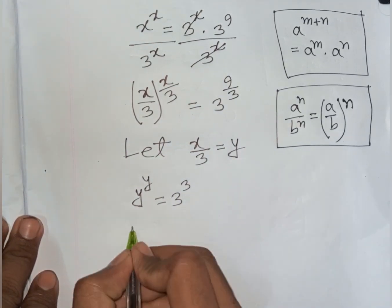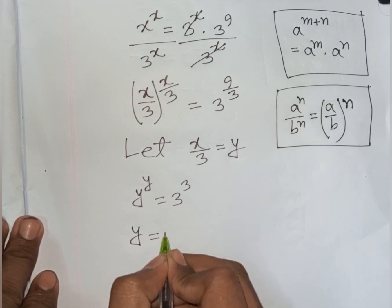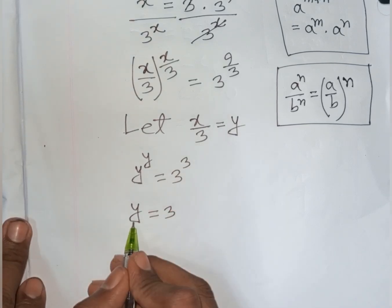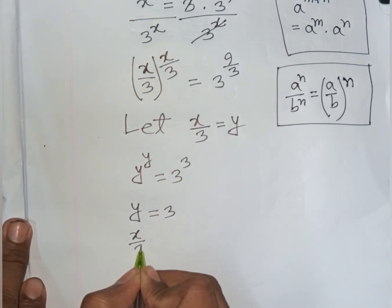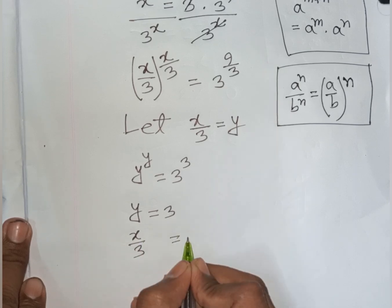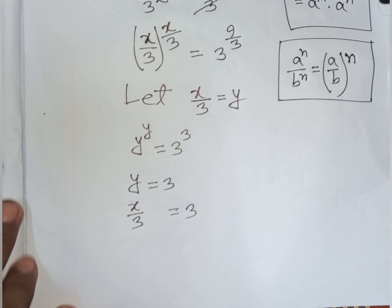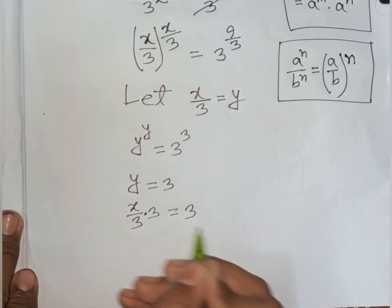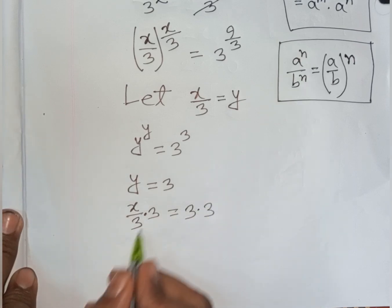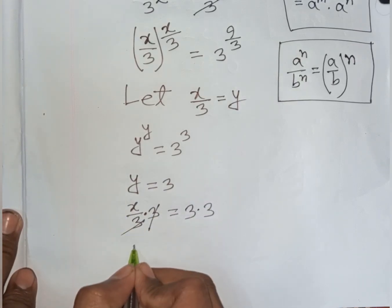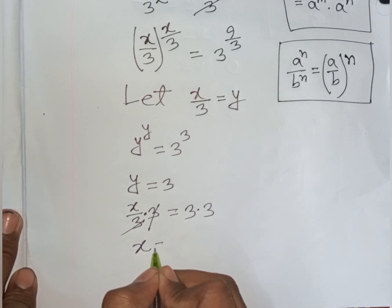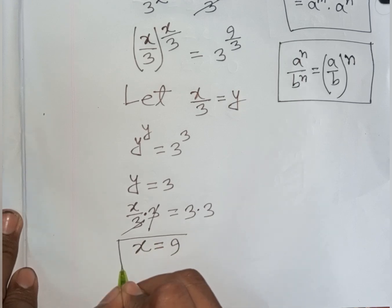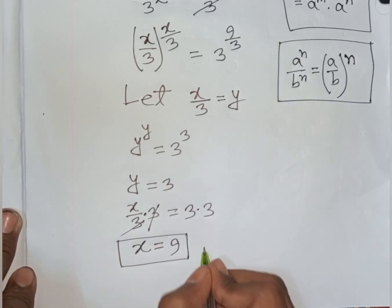From here, y equals 3. But remember that x divided by 3 was substituted by y, so x divided by 3 equals 3. To find x, multiply both sides by 3, and the 3s cancel, giving x equals 3 times 3, which is 9. So x equals 9 is the final answer.